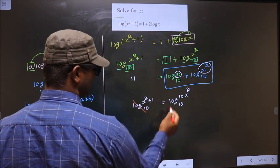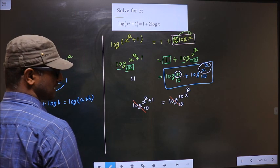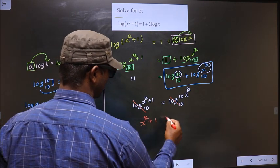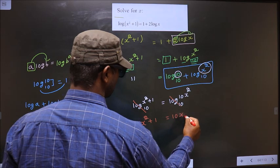Now log with base 10 cancels out on both sides. So you are left with x² + 1 = 10x².